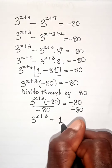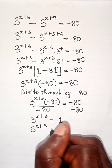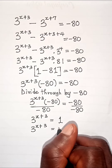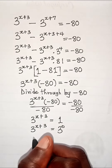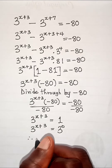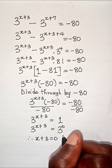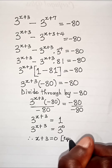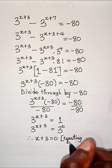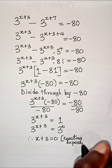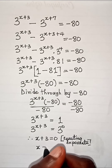And 1 can be expressed as 3 to the power of 0, so that we have the same base and can equate. When we equate the exponents, since the bases are equal, we have x plus 3 equals 0. We subtract 3 from both sides and x equals negative 3.